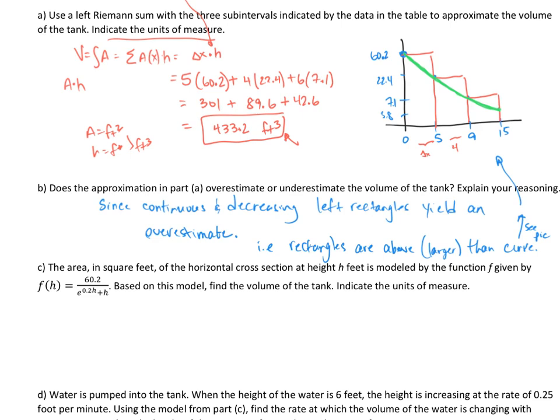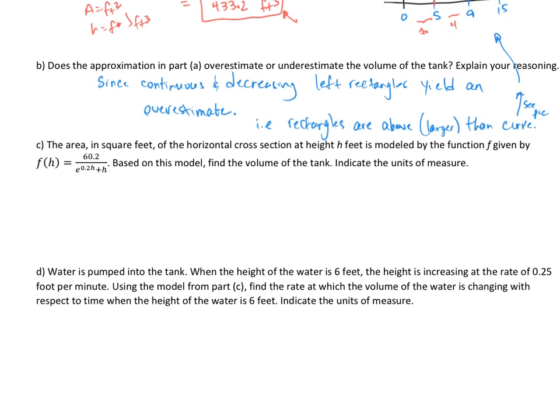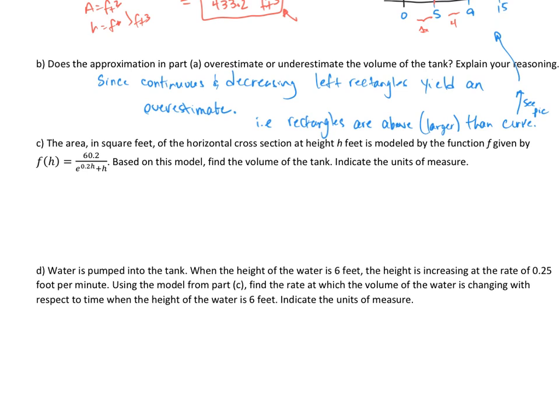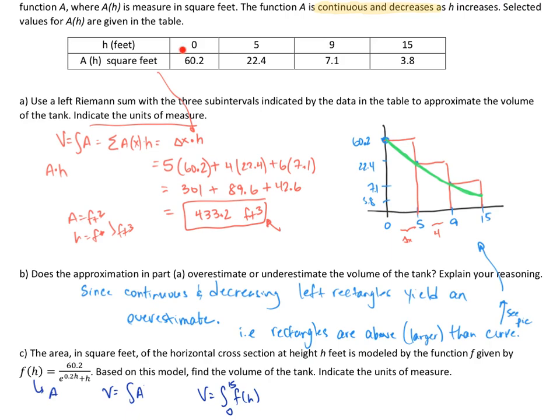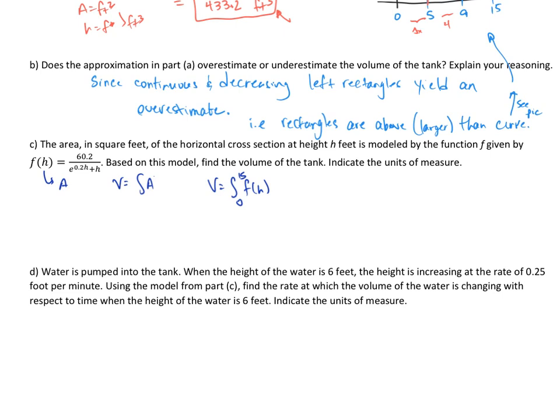All right, moving on to part C. Let's take a look. In square feet, the area in square feet of the horizontal cross section at height H is modeled by the function given by that. Based on this model, find the volume of the tank and indicate the units of the measure. So this is another area this time, and it's kind of expressing it a little bit differently. So we are told that this function right here is an area, and we need to find a volume. What do we always say? The volume is the integral of the area. So the volume will be the integral of this F of H from 0 to the 15 in my table. Right here in the table, it shows me that we've got to go to 15, from 0 to 15. So that's what I'm going to do. And don't forget, you need your dH right there. So this becomes the integral from 0 to 15 of 60.2 divided by e to the 0.2H plus H times dH.